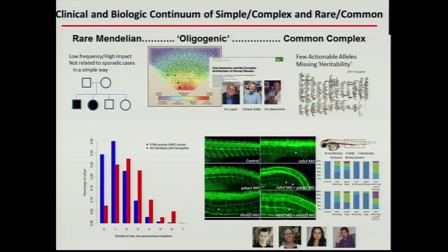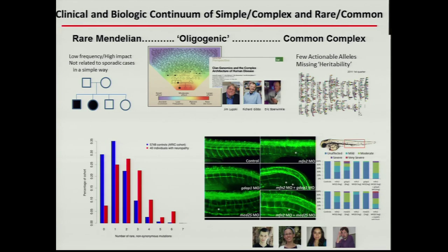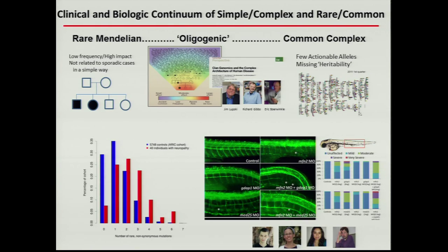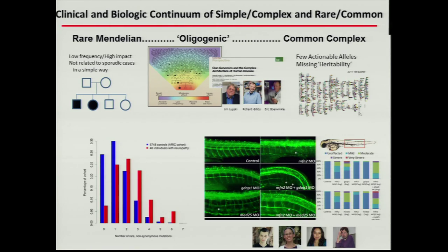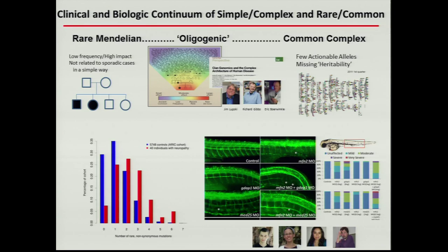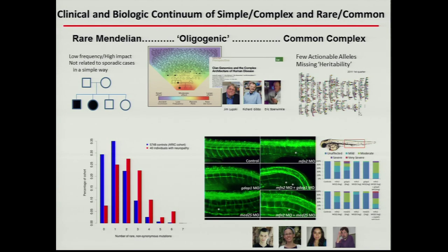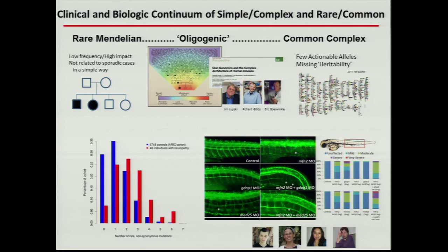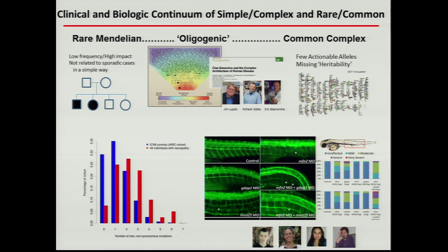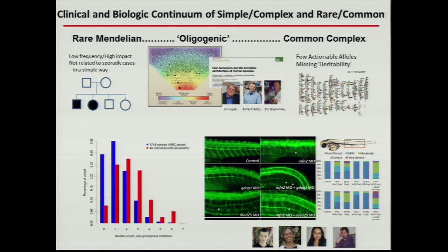We all know that there are examples of common diseases that have Mendelian forms, such as LDL receptor defects, familial combined, and many more examples. There are also examples where the rare Mendelian diseases clearly do not have an underlying single gene mutation. I'll give you a good example of that since they're less well known.